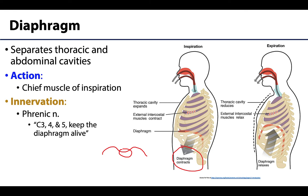The diaphragm is innervated by the phrenic nerve, which is derived from cervical spinal nerves C3, C4, and C5. There is a helpful mnemonic: 'C3, 4, and 5 keep the diaphragm alive,' indicating which spinal nerve levels provide the fibers that coalesce to form the phrenic nerve.